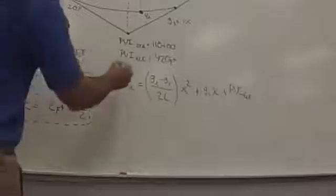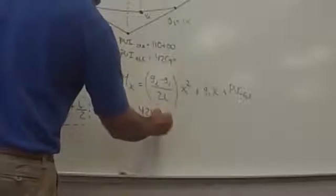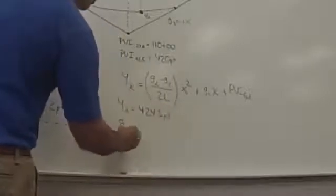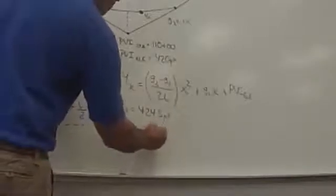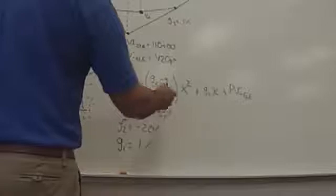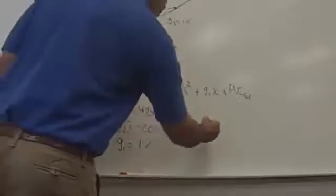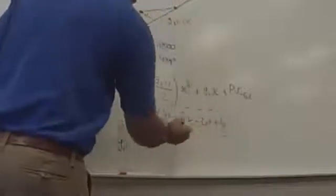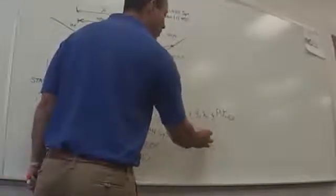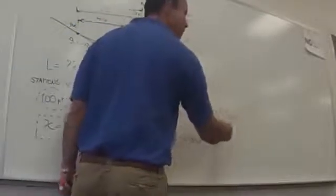So y sub x is equal to 424.5 feet. G2 is equal to minus 2.0%. G1 is equal to 1%. L, I don't have it. And x, x is equal to 2 feet plus L half. Now, the only unknown that we're going to have from this equation will be L, but we still need to put PVC elevation in terms of L.